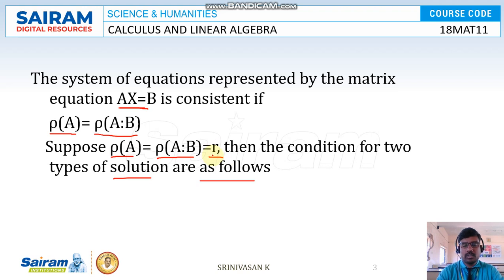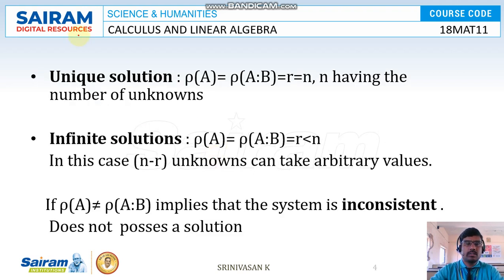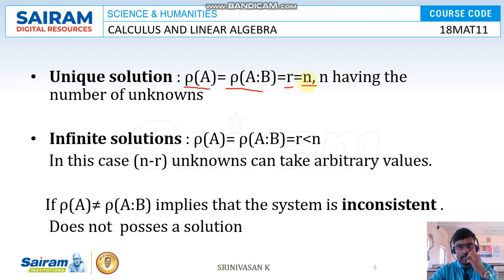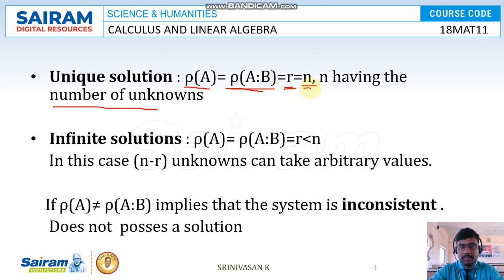The first solution type is the unique solution. We get a unique solution when rank of A equals rank of [A|B] equals r equals n, where r is the number of non-zero rows and n is the number of unknown variables. If rank of A equals rank of [A|B] equals n, we get a unique solution.